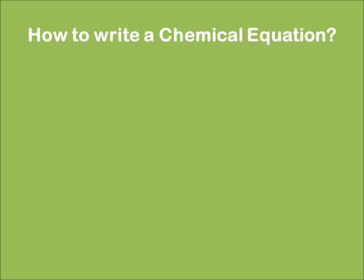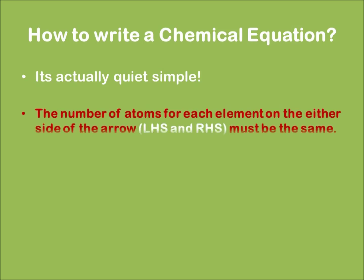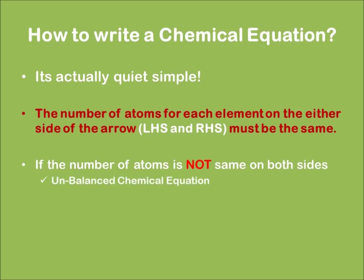Now let's see how to write a chemical equation. It's actually quite simple. It follows from a basic rule that the number of atoms of each element on either side of the arrow must be the same. If the number of atoms is not the same on both sides, it is called an unbalanced chemical equation. And if the number of atoms are the same on both sides, then it is called a balanced chemical equation.